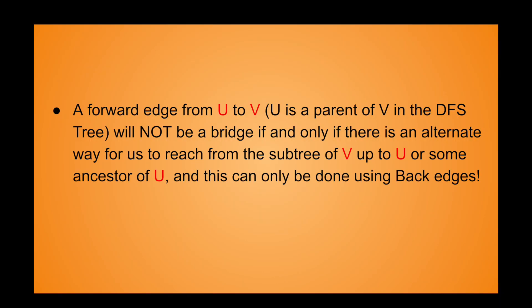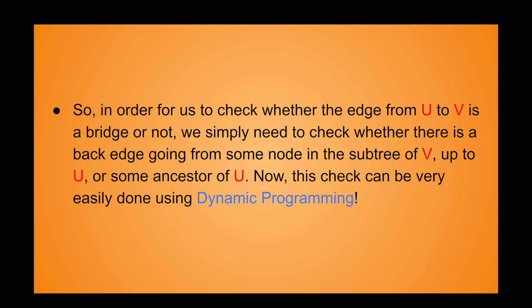Now let's shift our focus towards the forward edges. When will a forward edge between U and V, with U as a parent of V in the DFS tree, not be a bridge? It's natural to see that this will happen if and only if there is a way for us to reach from the subtree of V up to U or some ancestor of U. So in order to check whether the edge from U to V is a bridge, we simply need to check whether there is a back edge going from some node in the subtree of V up to U or some ancestor of U.